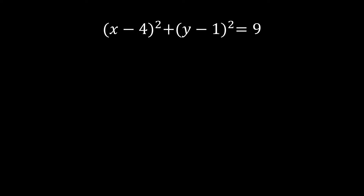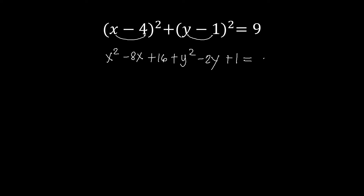Let's have this as our last example. We expand all the binomials. Square the first term: x squared. x times negative 4 is negative 4x, times 2 gives negative 8x. Square the last term: negative 4 squared is positive 16. Then expand the second group: y squared; y times negative 1 is negative y, times 2 gives negative 2y; negative 1 squared is plus 1. That equals 9. We move 9 to the other side: x squared minus 8x plus 16, plus y squared minus 2y plus 1, minus 9, equal to 0.